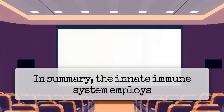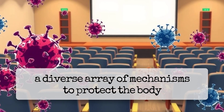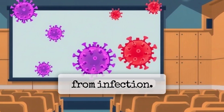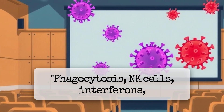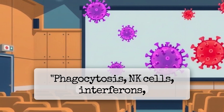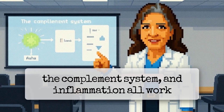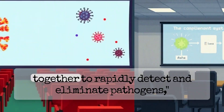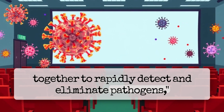In summary, the innate immune system employs a diverse array of mechanisms to protect the body from infection. Phagocytosis, NK cells, interferons, the complement system, and inflammation all work together to rapidly detect and eliminate pathogens.